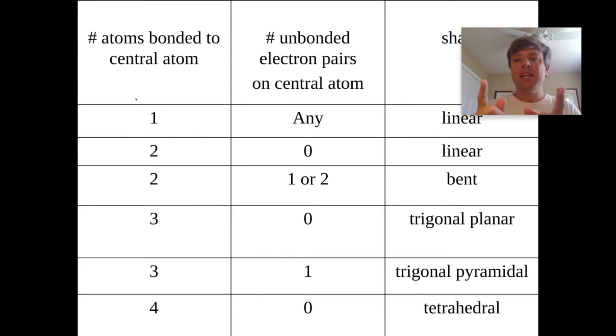So if you've got one atom attached to the atom in the middle, it's linear. If you have two atoms attached to the atom in the middle, then it depends, do you have any extra electrons on the atom in the middle? If there are no extra pairs of electrons, it's linear, because those two things will get as far apart from each other as possible. If you do have extra pairs of electrons on the central atom, then it causes it to be bent.